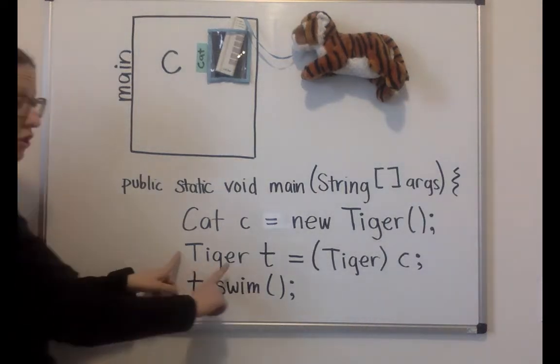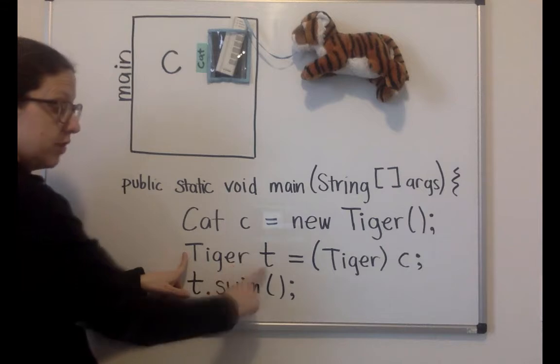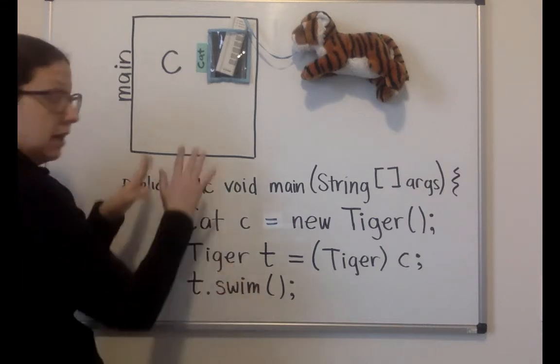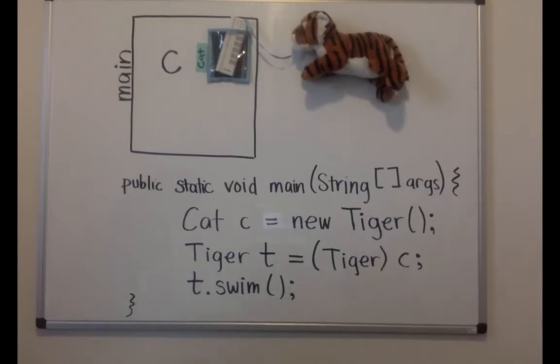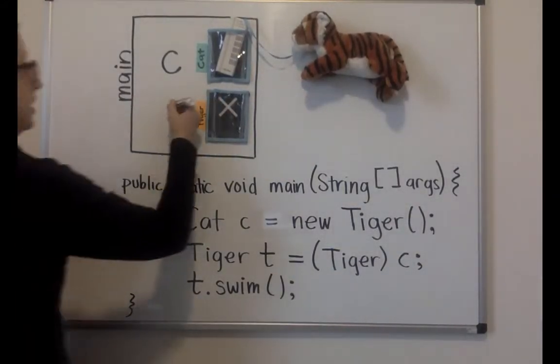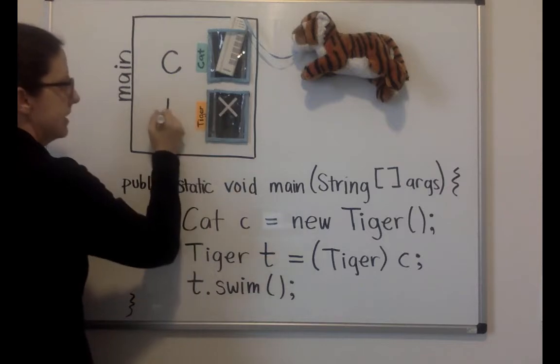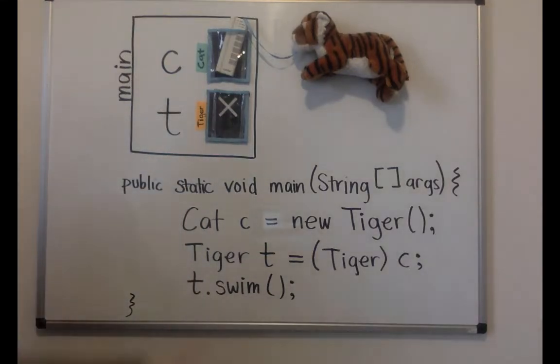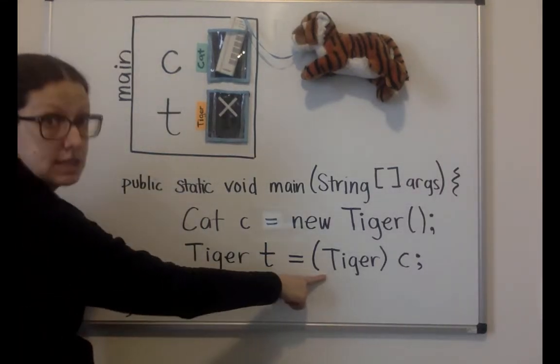What I show you here is I'm creating a new variable named T of type Tiger. I'll update my picture so that I have something that looks like that. I've got a pocket that can hold a variable, and this variable's name is T.